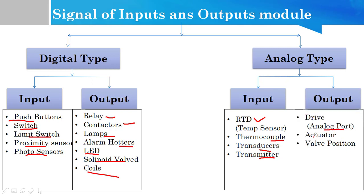For analog outputs, we have analog port, actuators, valve position. In the output section, we can use analog signals like 0 to 10V from PLC analog output.